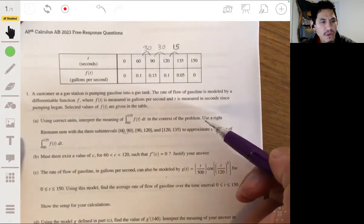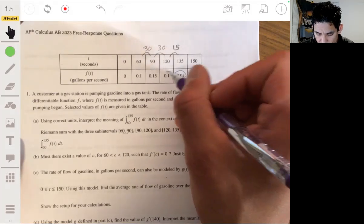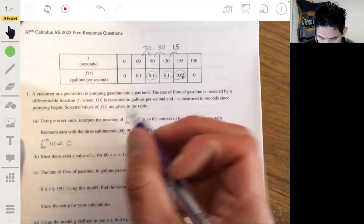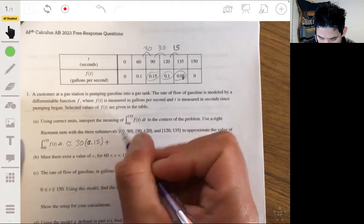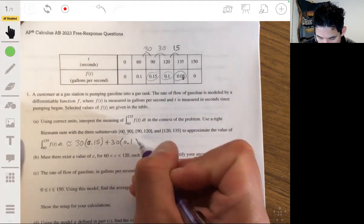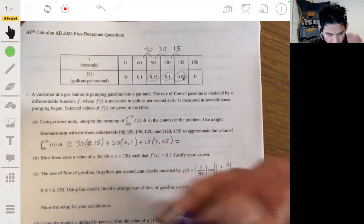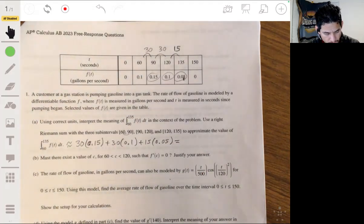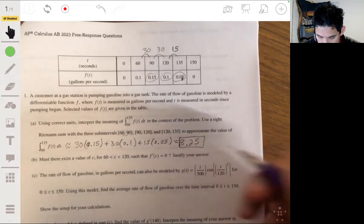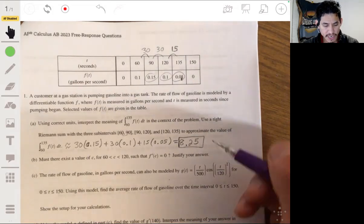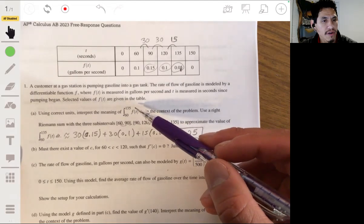So these are the widths of these rectangles, and the height, since we're saying right Riemann sums, are going to be the upper values. We're going to use this, this, and this. So then we set this equal to 30 times 0.15 plus 30 times 0.1 plus 15 times 0.05. Using our calculator, we get 8.25.